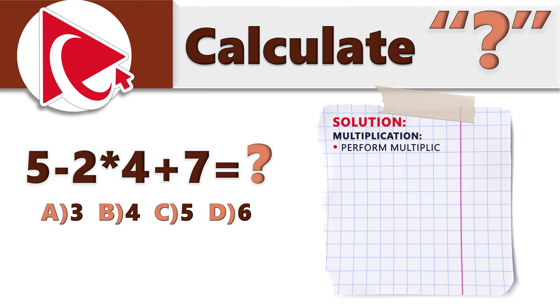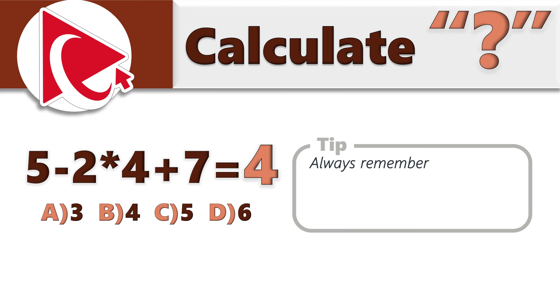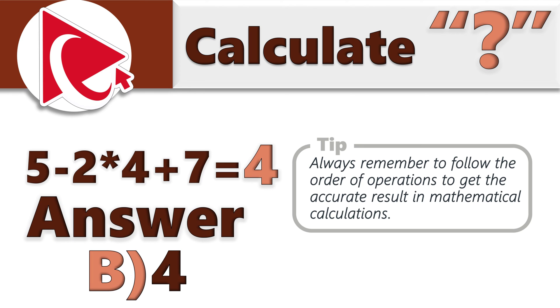Let's apply this order to this expression. We first need to do multiplication. 2 multiplied by 4 equals 8. So the updated expression will be 5 minus 8 plus 7. The next operation is from left to right. We need to do subtraction. 5 minus 8 equals minus 3. Next step, minus 3 plus 7 equals 4. So the tip here is always remember to follow the order of operation to get the accurate result in mathematical calculations. The correct answer here is choice B, 4.